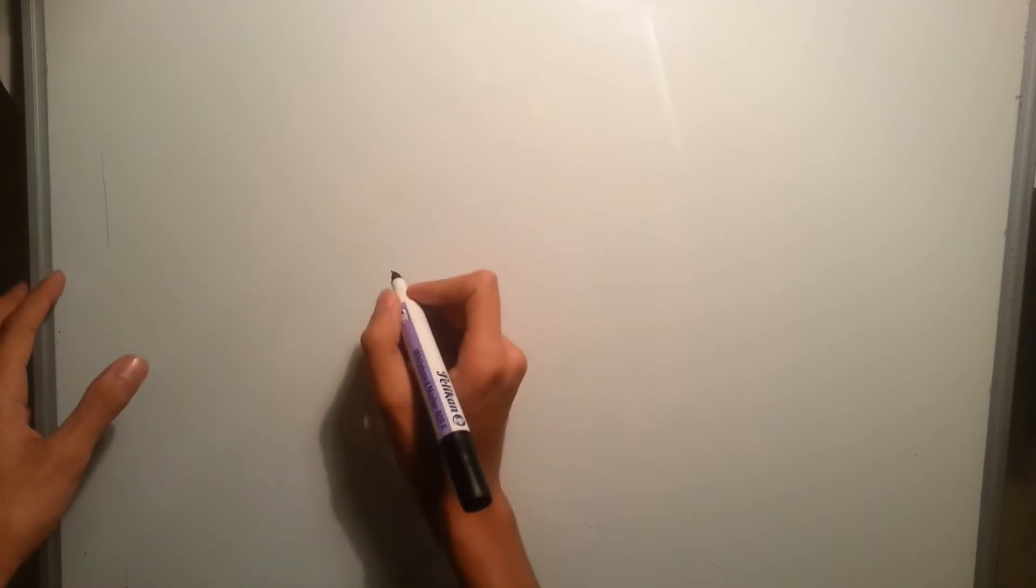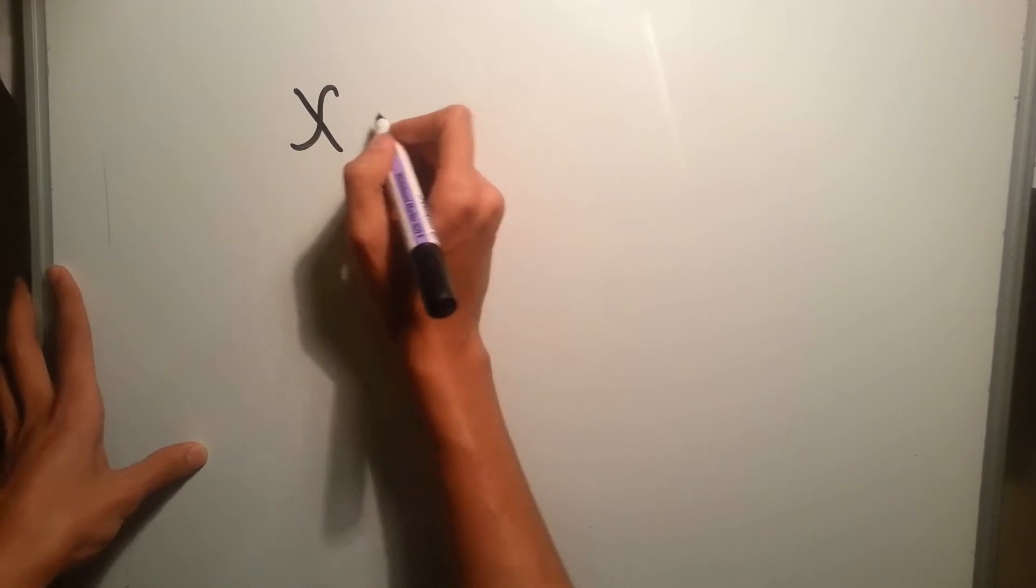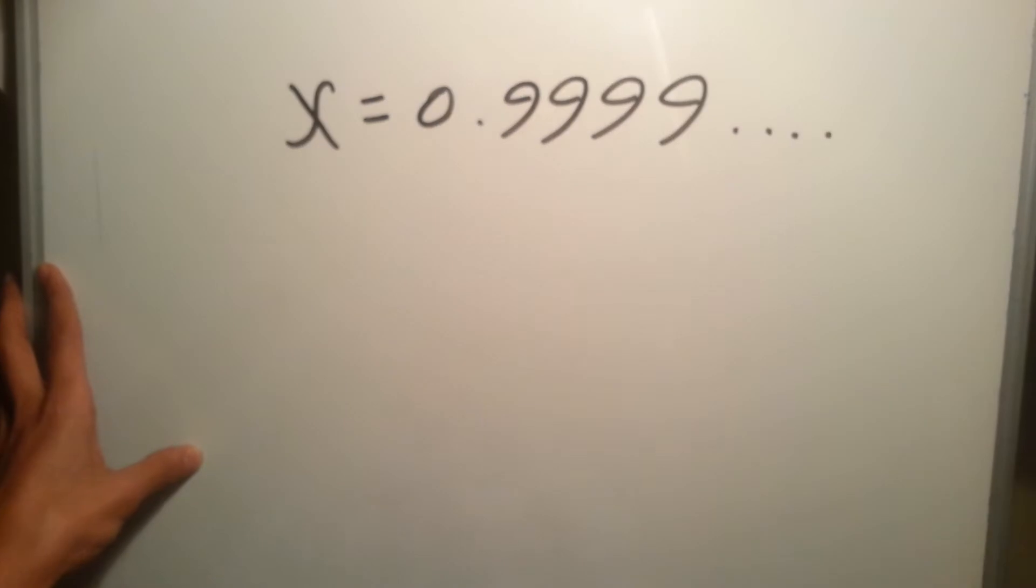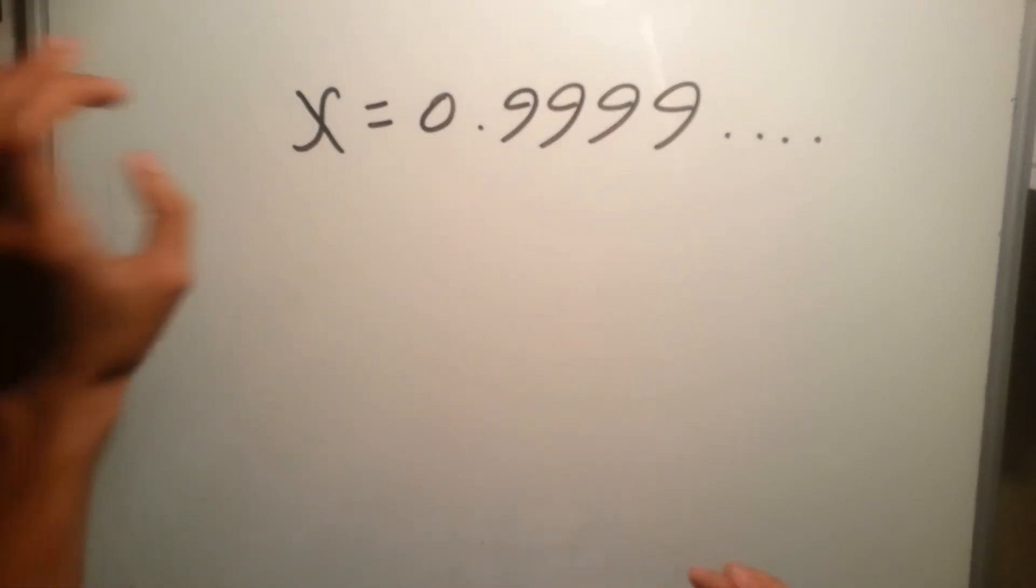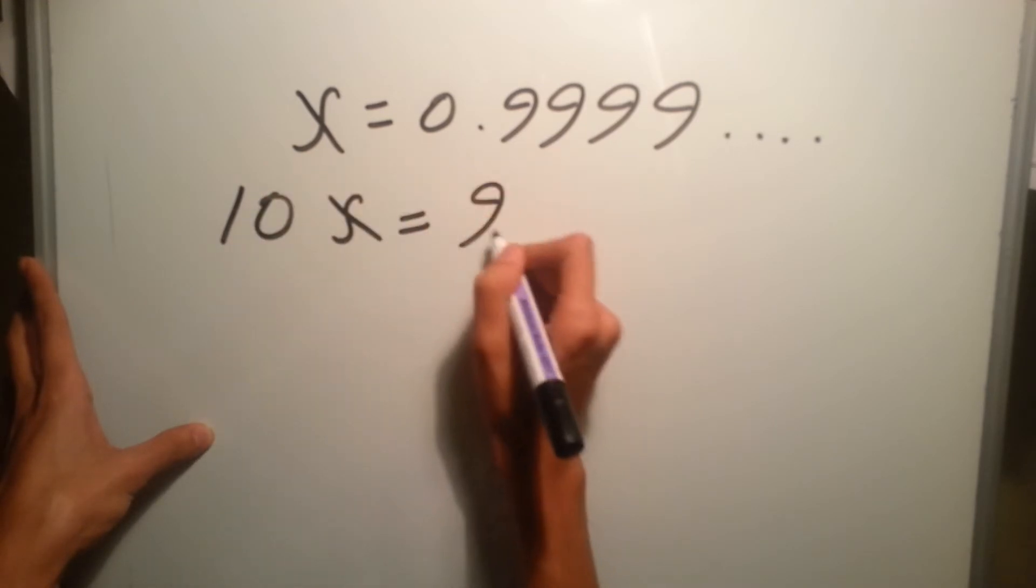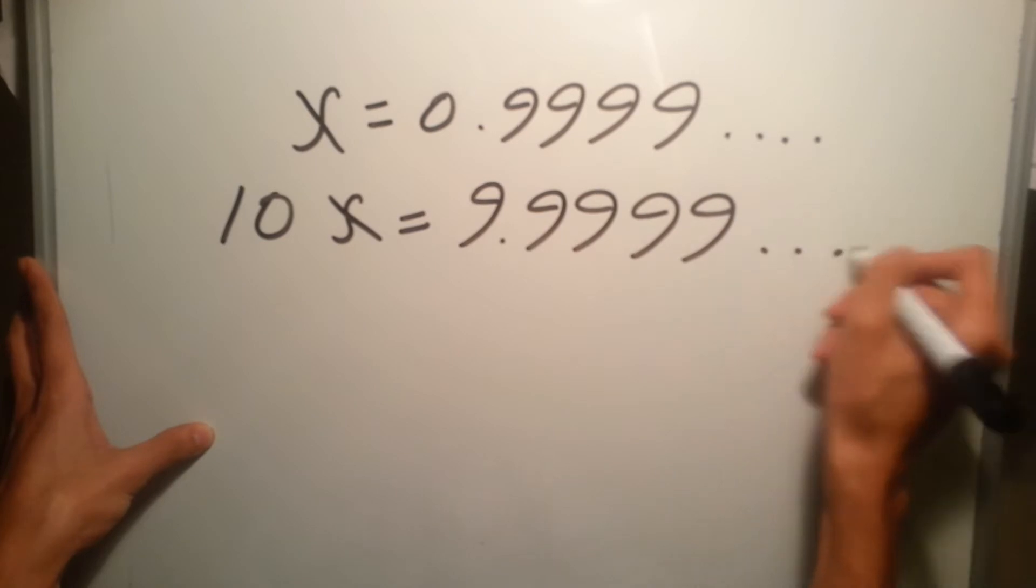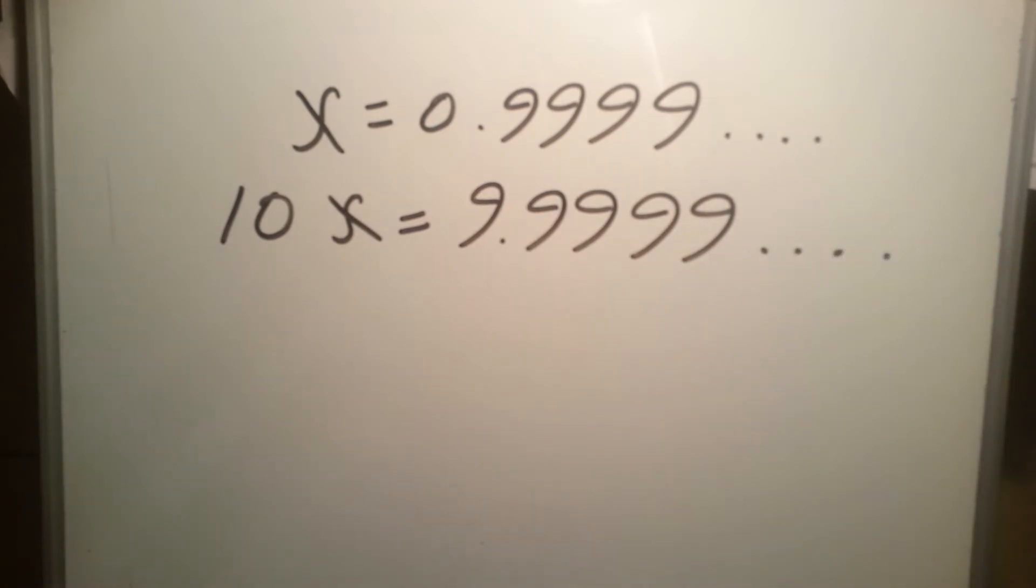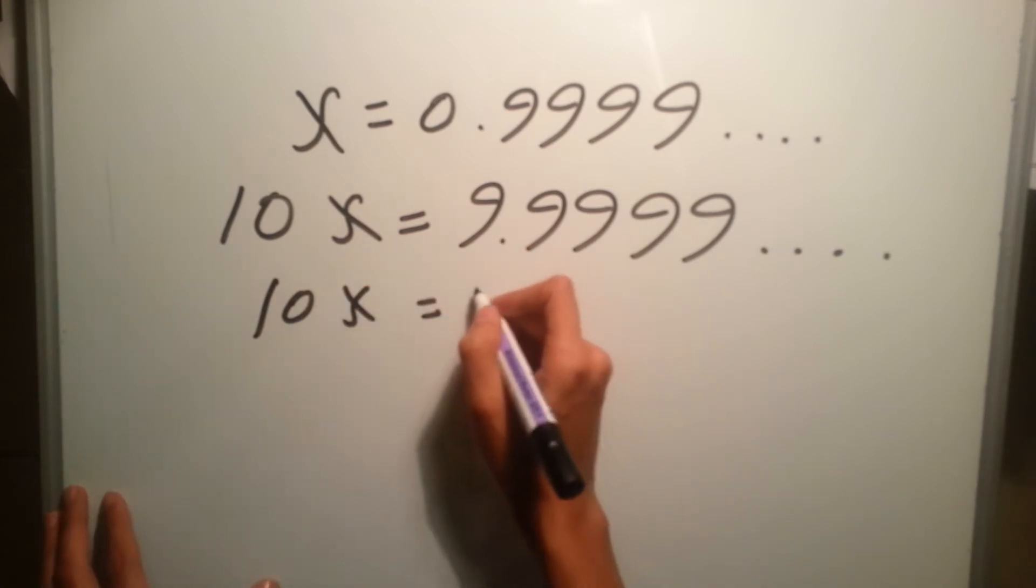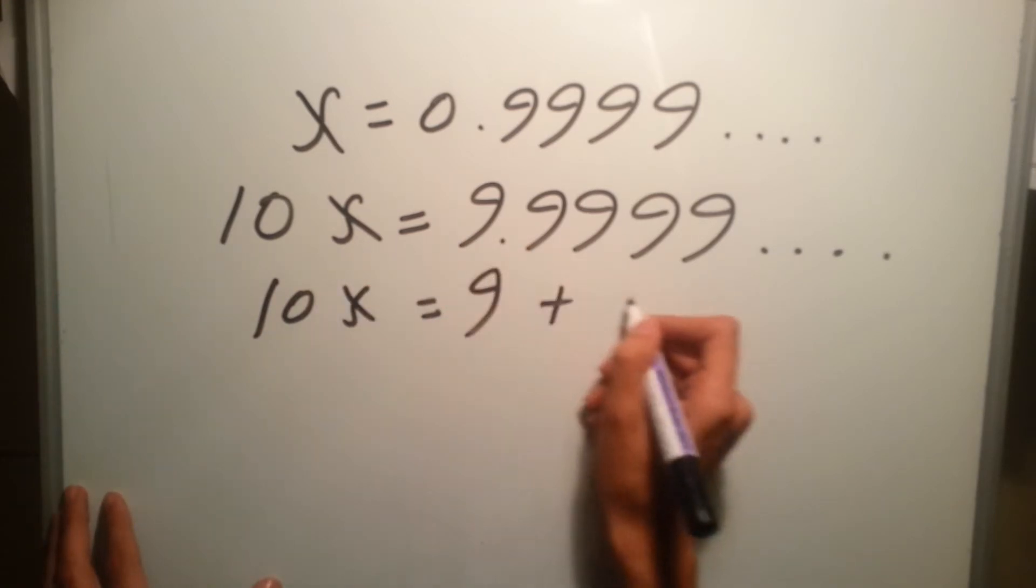Here are two of the most simplest proofs ever. The first proof says that let's say we have x equals this 0.9999 up to infinity, and we multiply x by 10. So basically 10x equals 9.9999, and let's say that this 10x will divide this number into two parts: 9 plus the 0.9999 up to infinity.